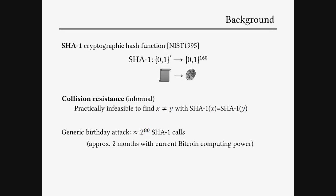First, some background. As we all know, SHA-1 is a cryptographic hash function standardized by NIST in 1995, and basically maps arbitrary length bit strings to a bit string of 160 bits that's basically random looking. Although we cannot formally define collision resistance for these dedicated hash functions, an informal definition of collision resistance of SHA-1 is that it's practically infeasible to find different messages X and Y that have the same output hash function.